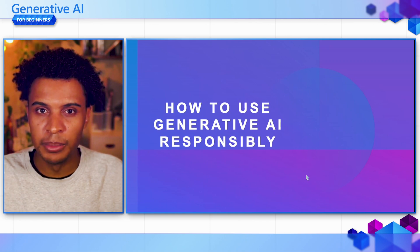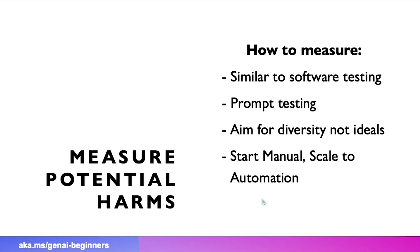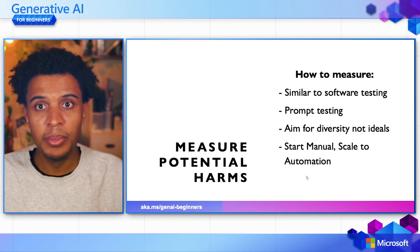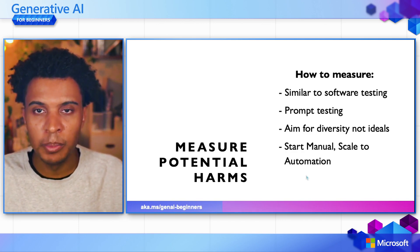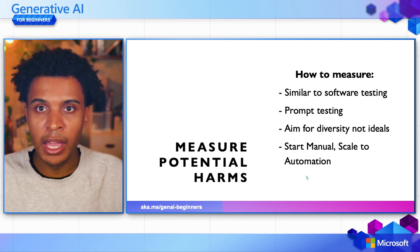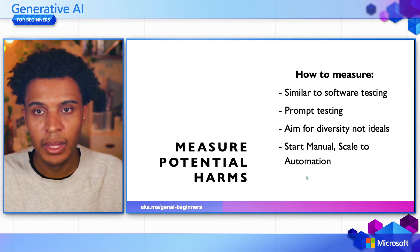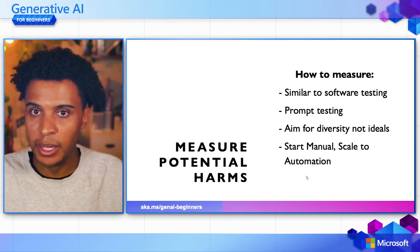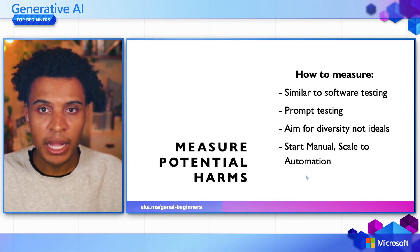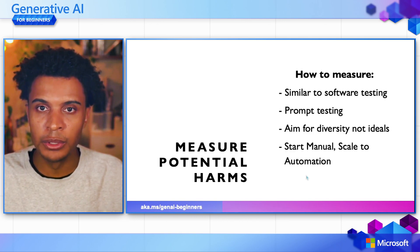So how do we actually use generative AI responsibly now that we understand the potential harms? The first thing is to measure these potential harms. We encourage taking a similar approach to software testing, but also doing things like prompt testing — aiming for a diversity of prompts that might be used by your users. These aren't the ideal prompts; they're not the happy path. You should incorporate anything that might come about when deploying your application into your prompt testing. Start manually — sending a prompt to the large language model and evaluating the response — but you can also scale to automation by batching prompts. Starting manually gives you a high-touch and very clear understanding of how the large language model is responding to your use case.